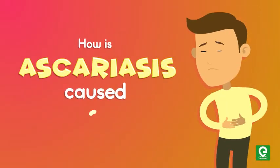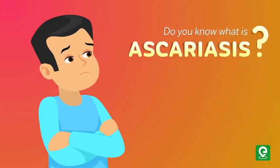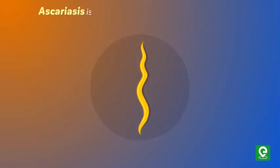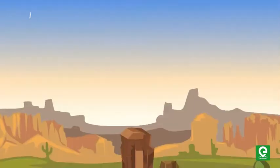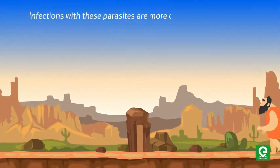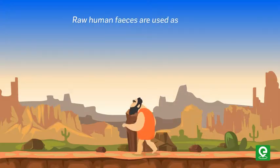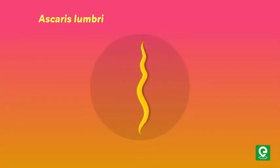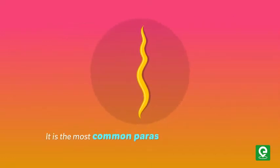How is Ascariasis caused? Ascariasis is an infection of the small intestine caused by Ascaris lumbricoides. Infections with these parasites are more common where sanitation is poor and raw human feces are used as fertilizer. Ascaris lumbricoides is the large roundworm of the phylum Nematoda, and it is the most common parasitic worm in humans.